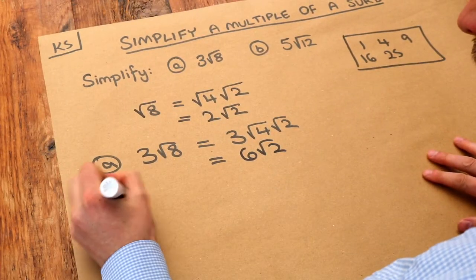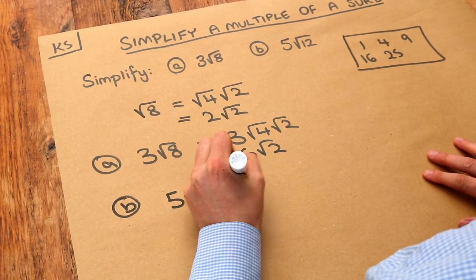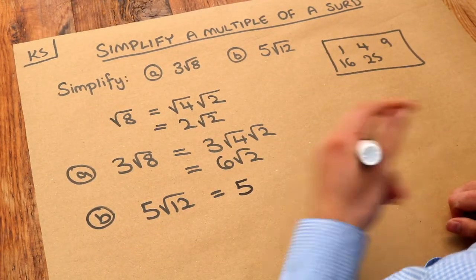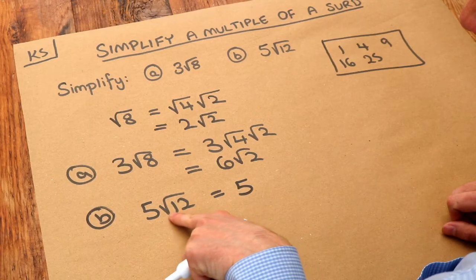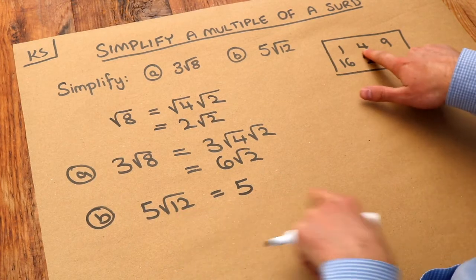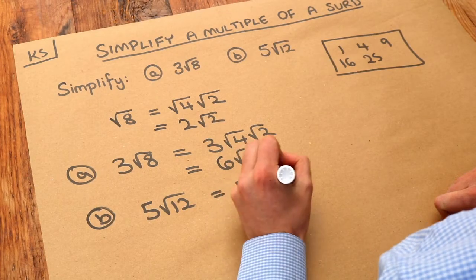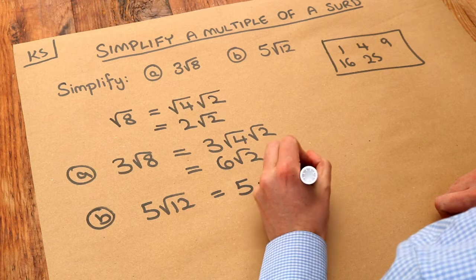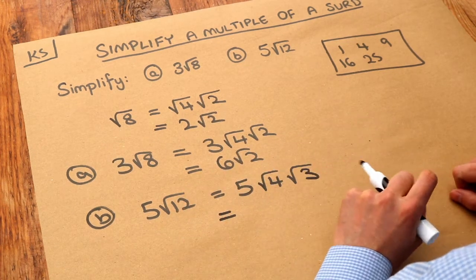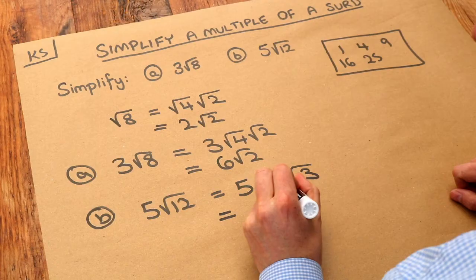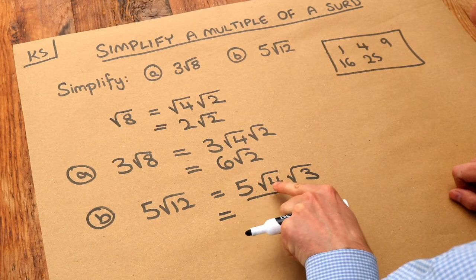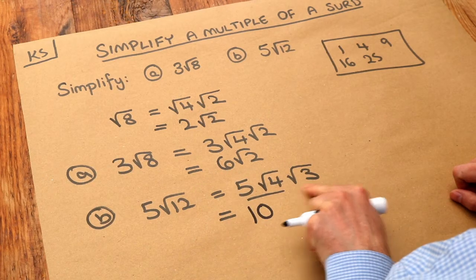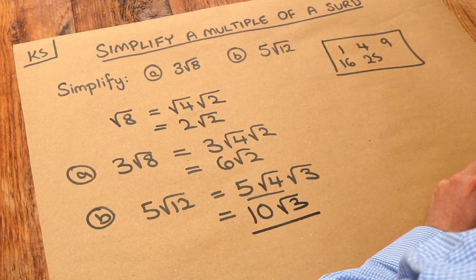Let's use that for this second example, five root twelve. So let's leave the five there and then we simplify the root twelve. So what's the biggest square number that goes into twelve? It's four again. So we write root four and then root. Well four times what is twelve? It's three. And then the final step I encourage you to do in your head. What's five times the square root of four? Five times two is ten. So we get ten and then we still got that root three there. So that is the final answer.